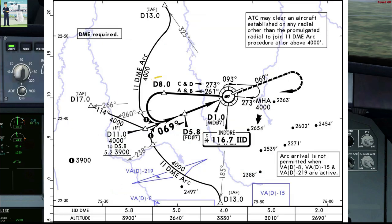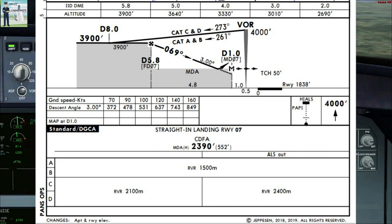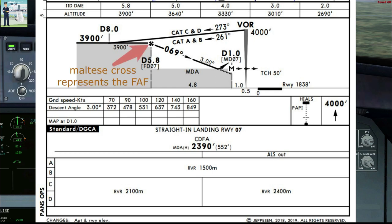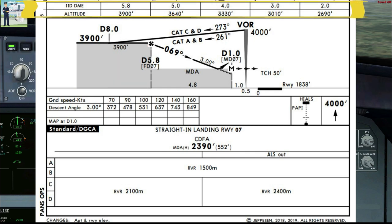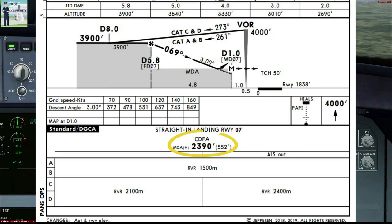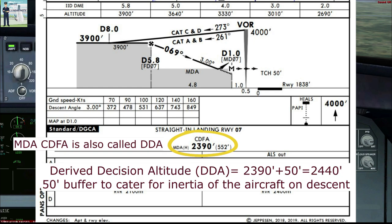At 8 DME, we shall commence our level base turn to the left and intercept our final approach course of 069. On final approach course, reaching our final approach fix at 5.8 DME, we shall commence our descent as per the DME altitude table until our CDFA MDA of 2390 plus 50 feet, which gives us 2440 feet.